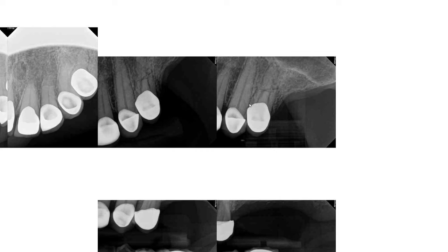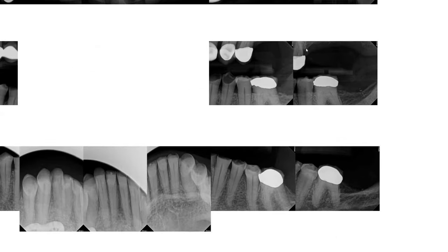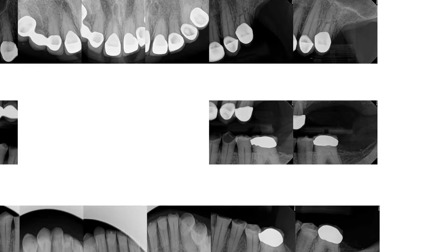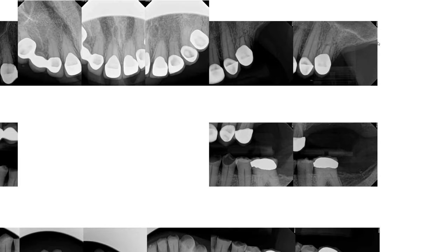Luckily, from what I can tell, there's no evidence of severe bone loss on this particular tooth. This is not the ideal bite-wing radiograph, but you can see that the crest comes up pretty close to where we expect it to be. Just distal to that, we've lost a significant amount of bone, as we would expect — the ridge undergoing normal atrophy after the extraction.